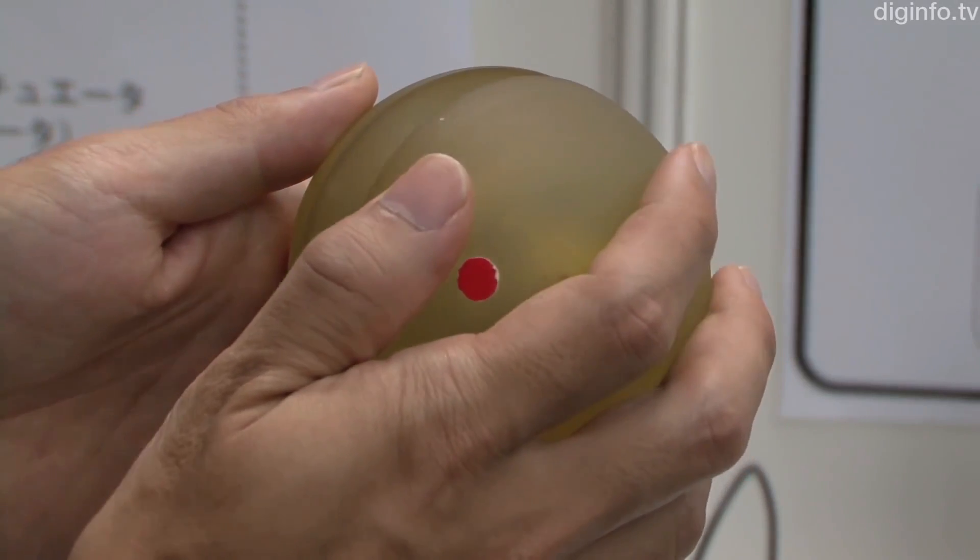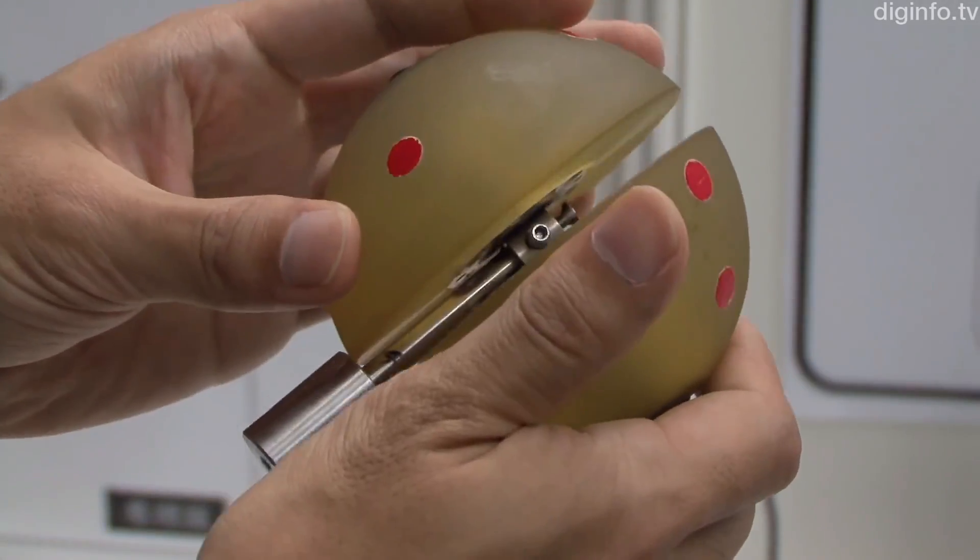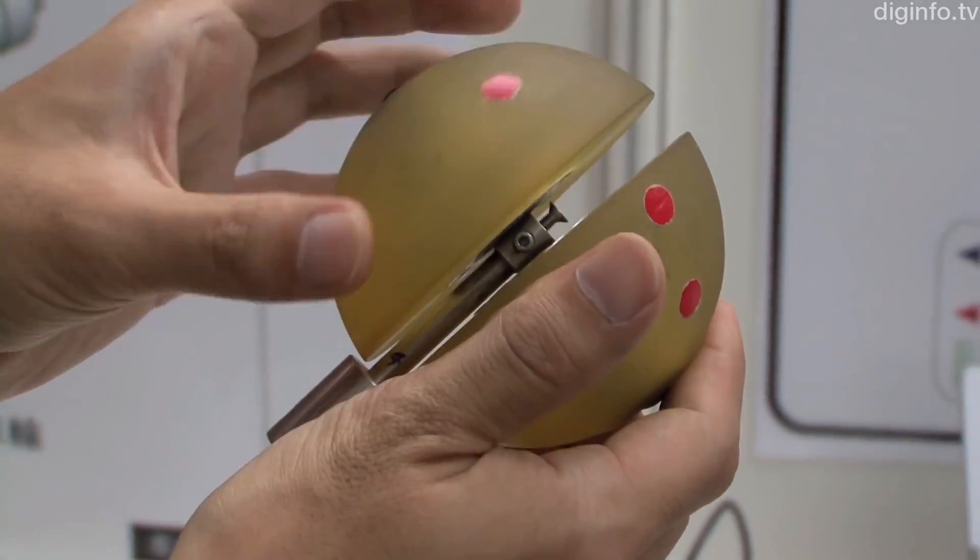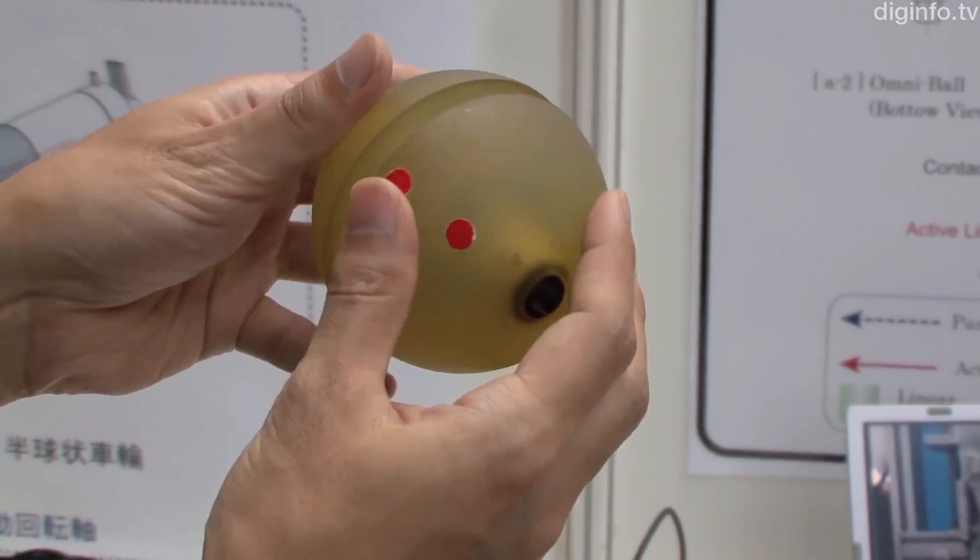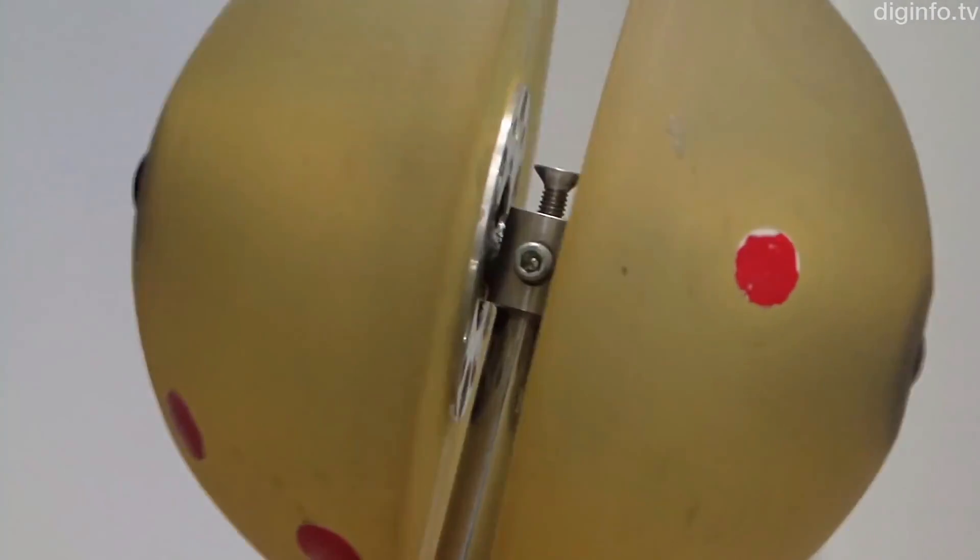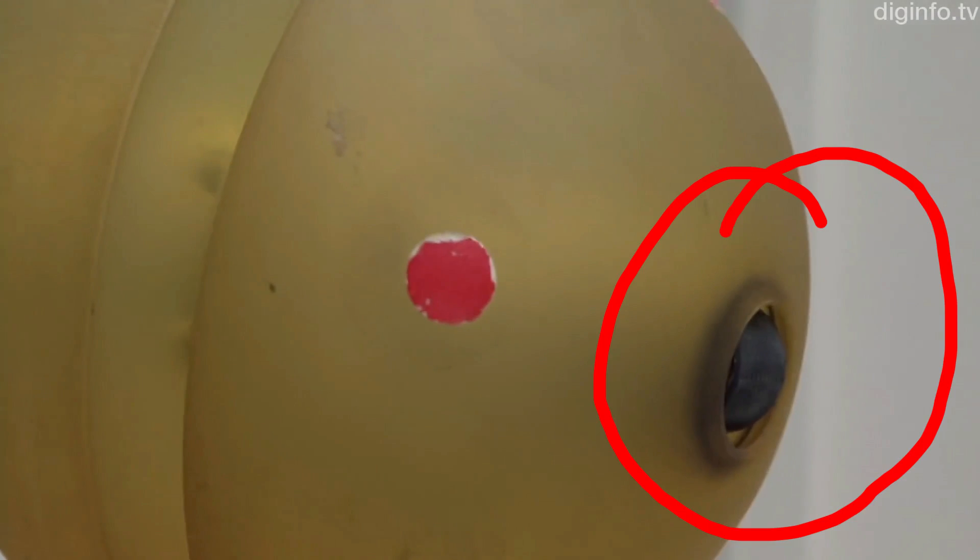So let's check back on that video. Yep we've definitely got our hemispheres which rotate independently and they're fixed to the axle in the same way. But what's that on the end of the axis? Yep it's a wheel.